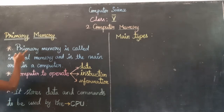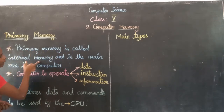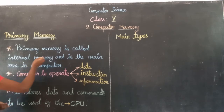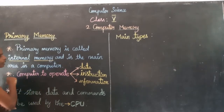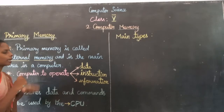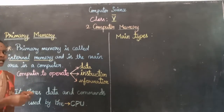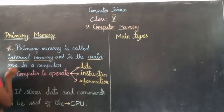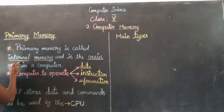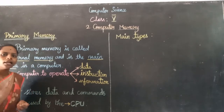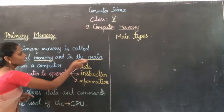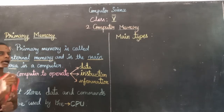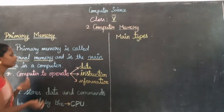Primary memory — what do we call it? Internal memory. Primary memory is the main area of the computer. Primary memory is also called internal memory of the system.